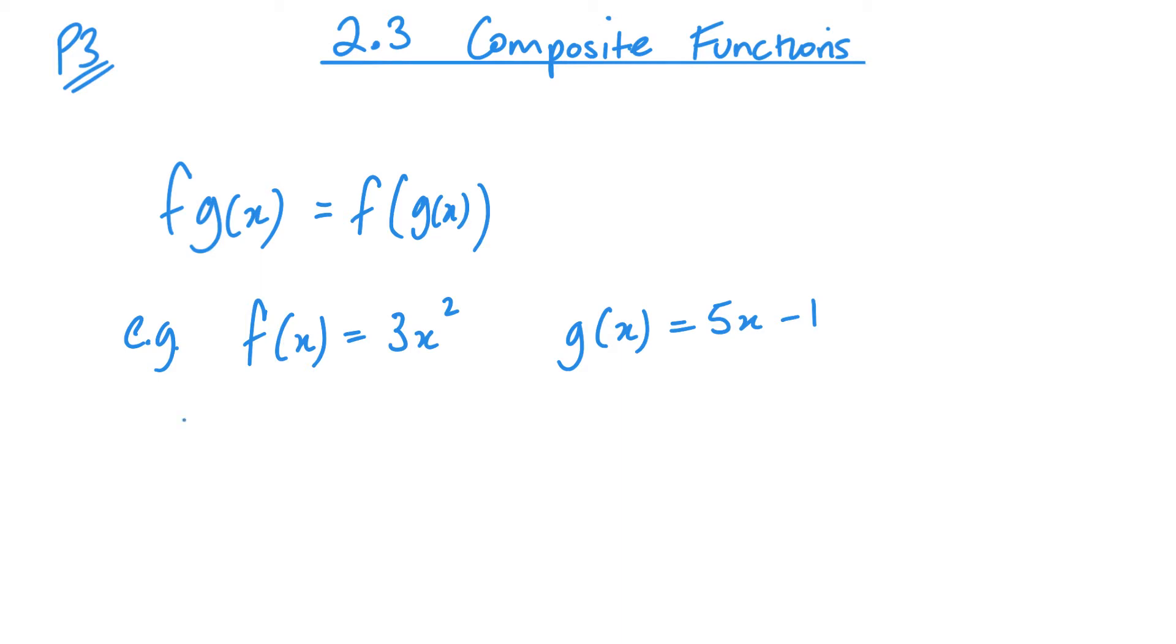So if I had to find what fg of 2 was, what that means is I'm first going to find g of x, or g of 2 I should say. So that's 5 lots of 2 minus 1. So that's 9. So fg of 2 is the same as f of 9. Now that I know that, I can then go work this out. So this is 3 times 9 squared. 9 squared is 81, times 3 is 243. And that is it done.